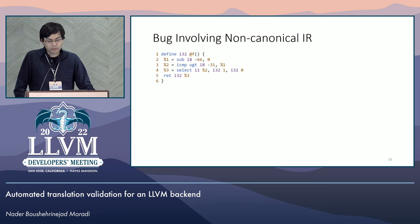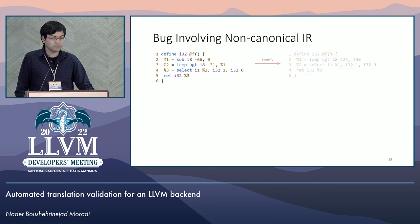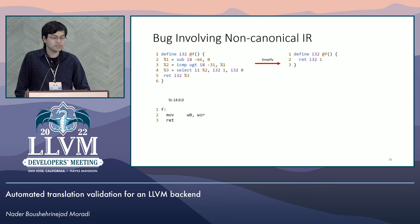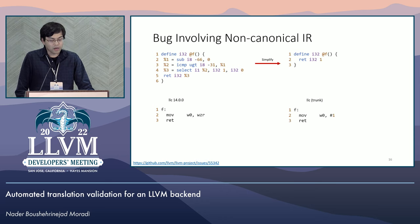Here I'm going to quickly go over two of them. The first one starts with a function generated using alive-mutate. This function uses non-canonical IR with several constant parameters. If we simplify this code by hand or run opt, we see that the function should return one. However, the generated code returned zero at the time when we reported this bug. This bug is now fixed in the latest version of LLVM.